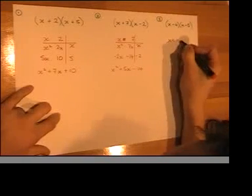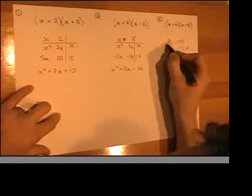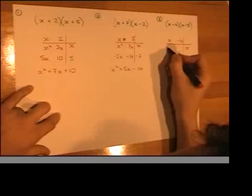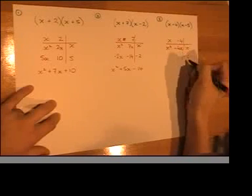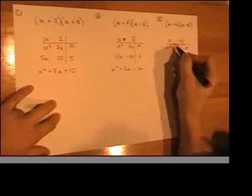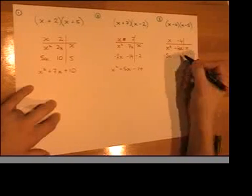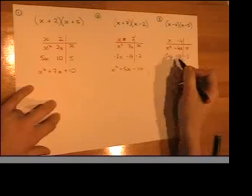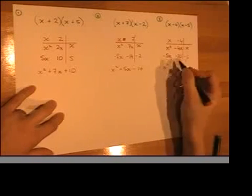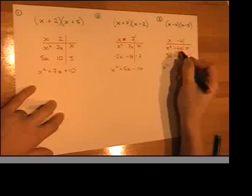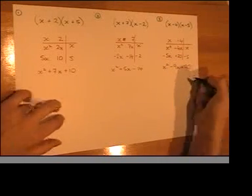And lastly, x times x is x squared. Minus 4 times x, minus 4x. Minus 5 times x, minus 5x. Minus 4 times minus 5 is plus 20. Don't really need the plus sign, but I'm emphasizing it. It is there. Collecting those two together. Minus 5 minus 4 is minus 9x. Plus 20. All three done.